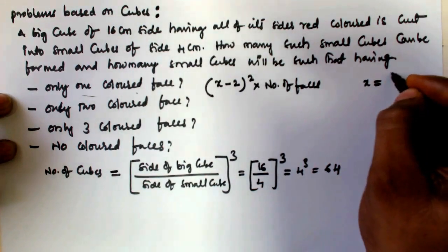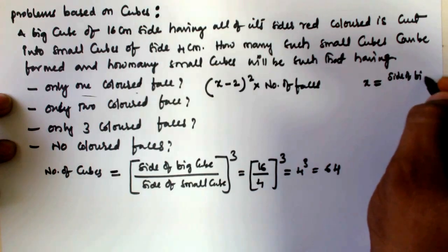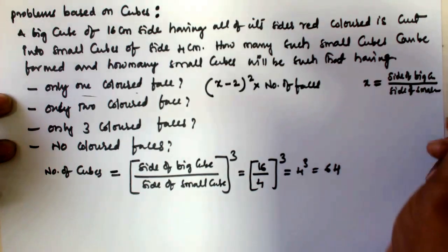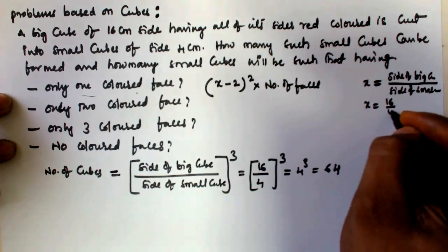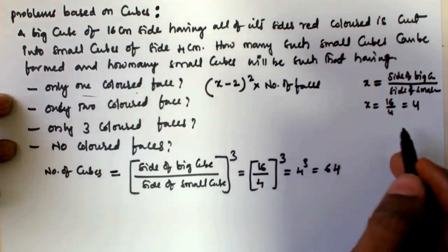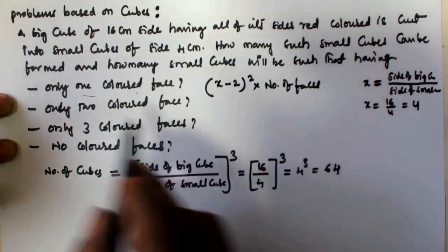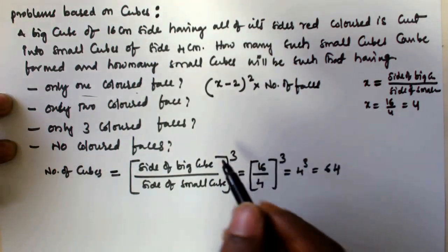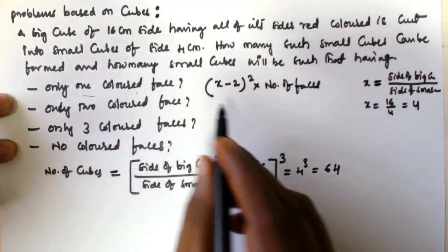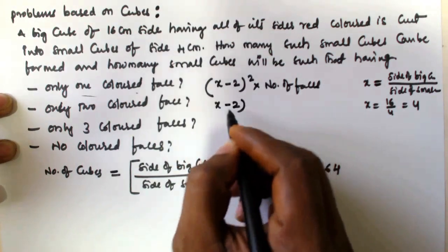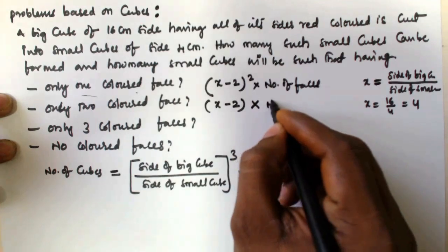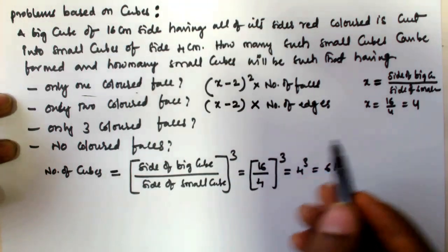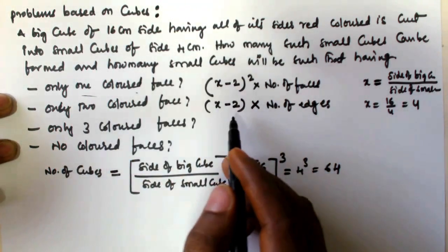Where x is equal to the side of the big cube divided by the side of the small cube, so x equals 16 divided by 4, which is 4. And the number of cubes having two colored faces is given by (x minus 2) multiplied by the number of edges.